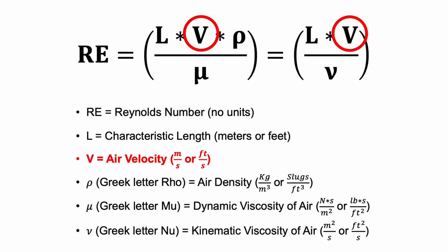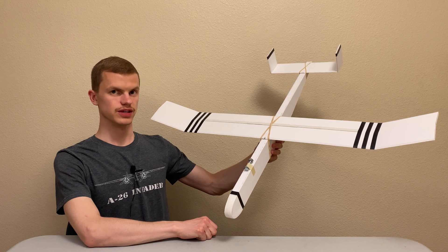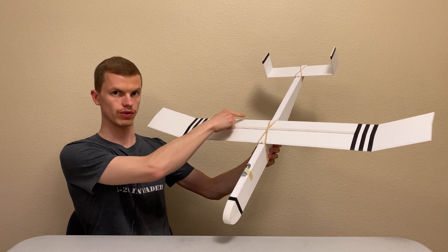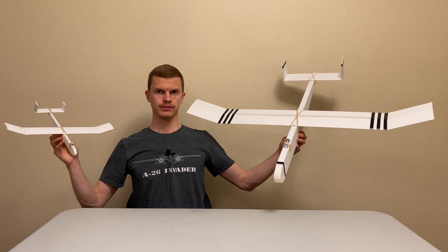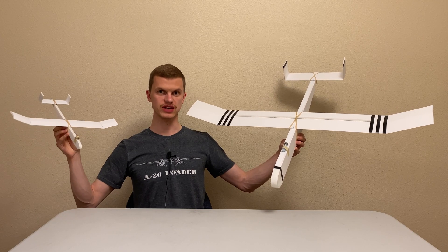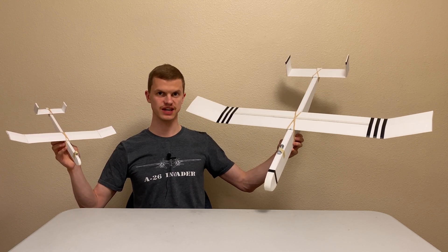The first thing we'll notice is that increasing the speed increases the Reynolds number. Likewise, a longer characteristic length results in a higher Reynolds number as well. For airplanes, the characteristic length is usually chosen to be the chord length of the airfoil. The density and viscosity of the air depends on temperature and pressure. I've put a link in the description to the Engineering Toolbox website where you can find values for different air densities and viscosities at different temperatures and altitudes. To summarize, small airplanes flying slowly have low Reynolds numbers, and big airplanes flying fast have high Reynolds numbers.